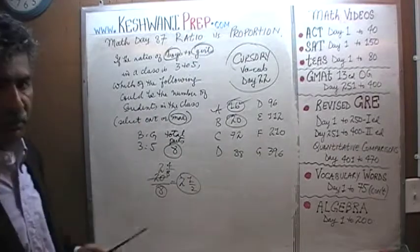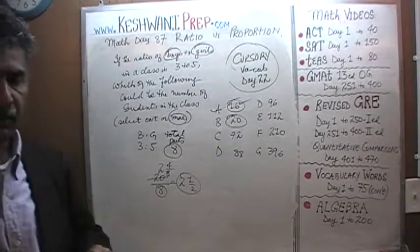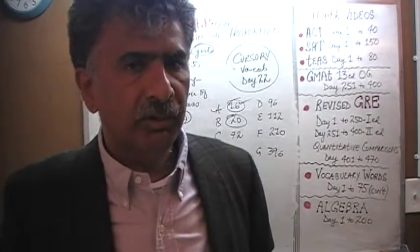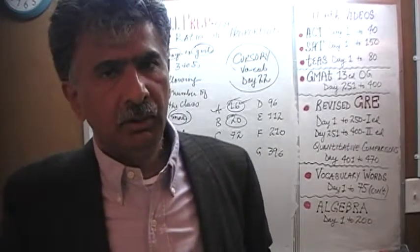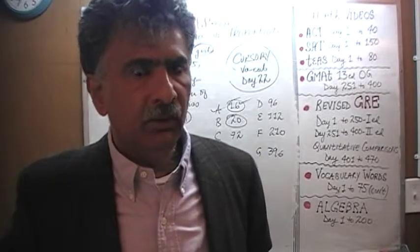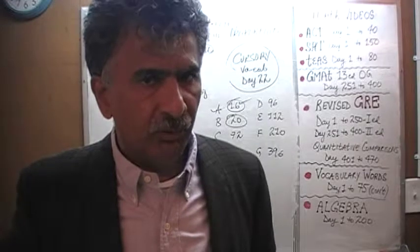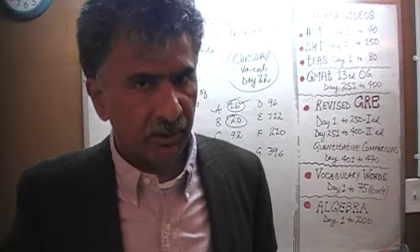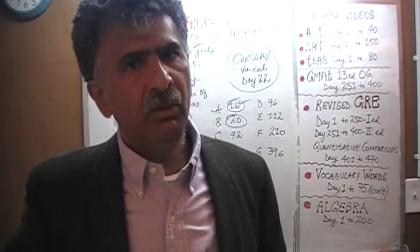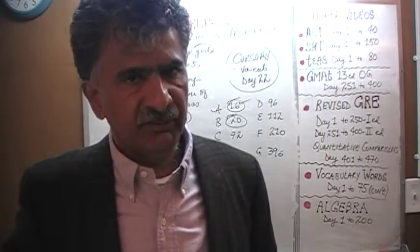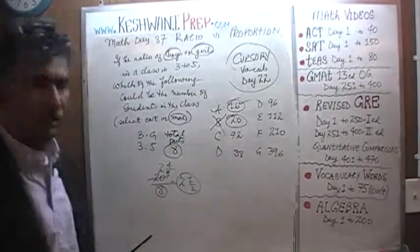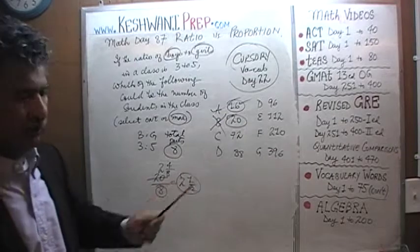The nature of this question requires integers — whole numbers — because we are dealing with boys and girls. When ratios involve boys to girls, blue cars to red cars, or students to teachers, we cannot have fractions or decimals. So 20 is not possible; we can't divide 20 by 8 evenly. How about 72?